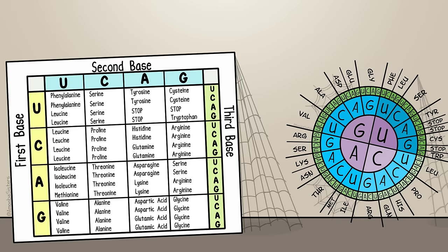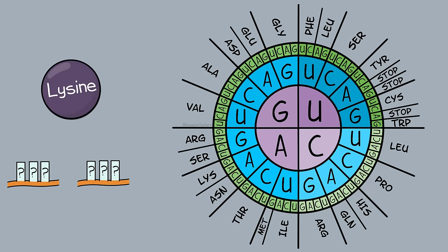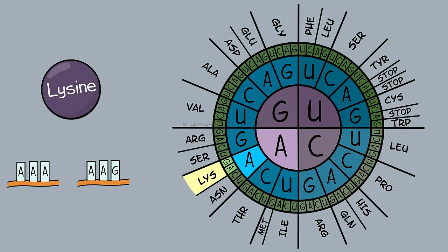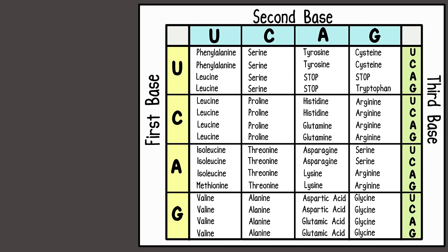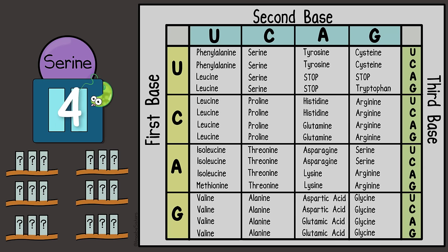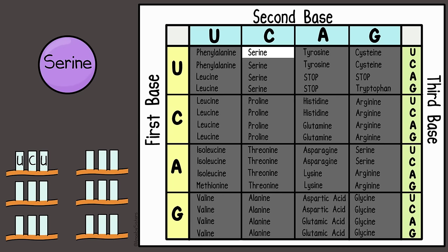Pitfall number three: not practicing. You gotta practice—that's why this video has a video companion. So let's do some more practice by going backwards. Using this circular codon chart, can you tell me the two codons that code for lysine? The codons AAA and AAG code for lysine. Now using this rectangular codon chart, pause this video to determine the six mRNA codons that code for the amino acid serine. The mRNA codons that code for serine are UCU, UCC, UCA, UCG, AGU, and AGC. That's a lot of codons.